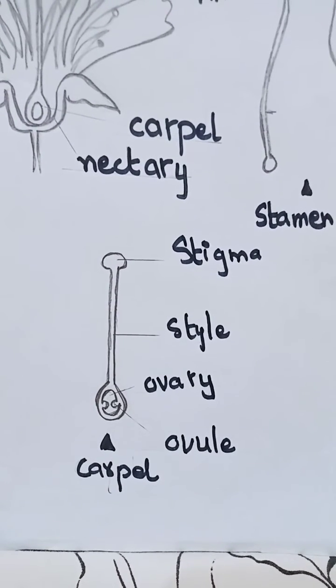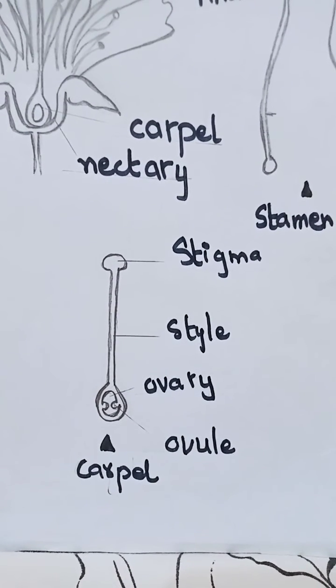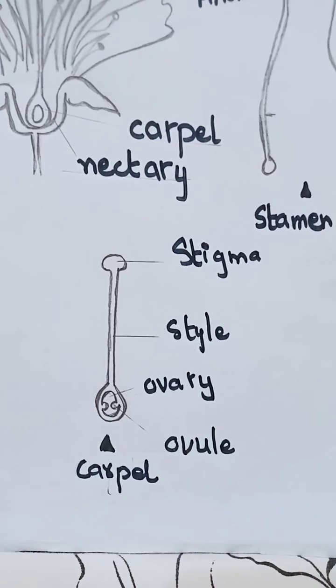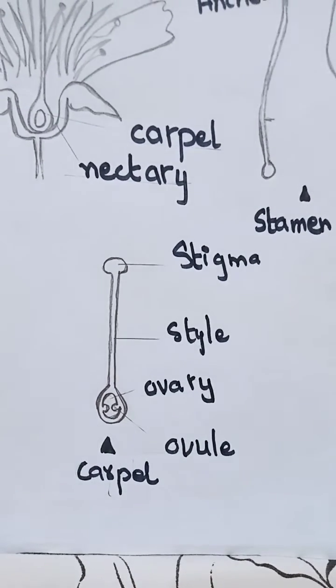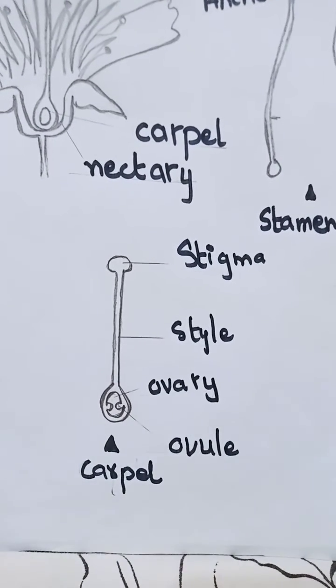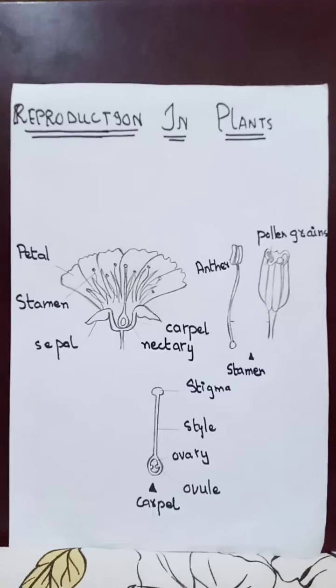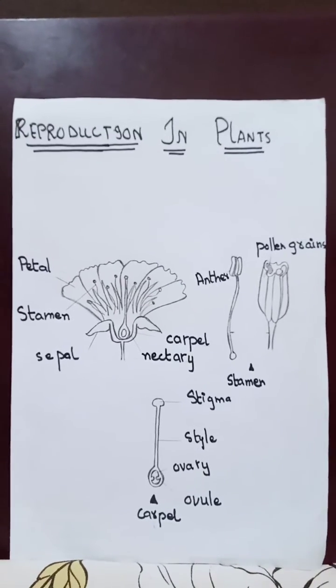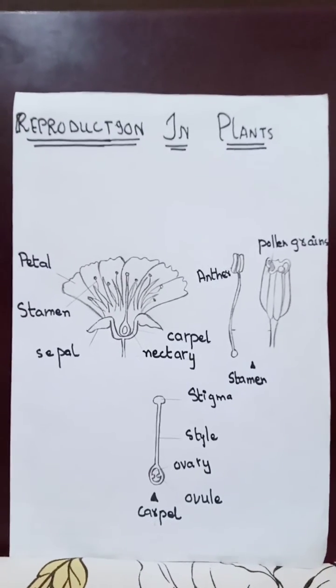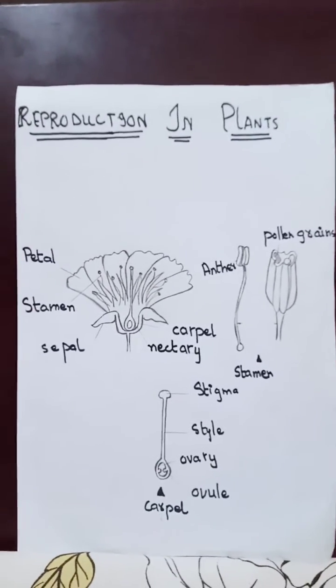There is an ovary. The ovary is where the female gametes are produced. Hope you understand the reproduction in plants.